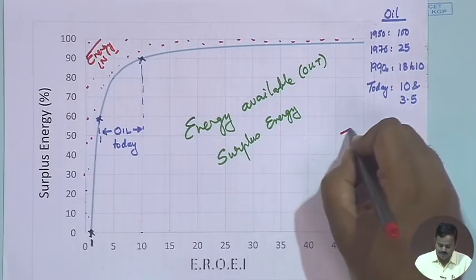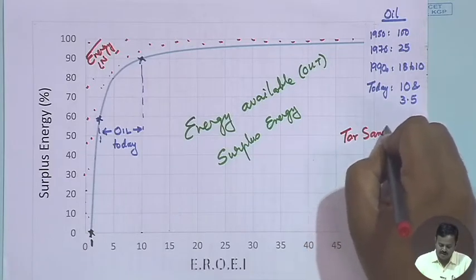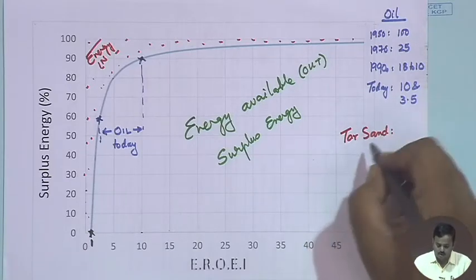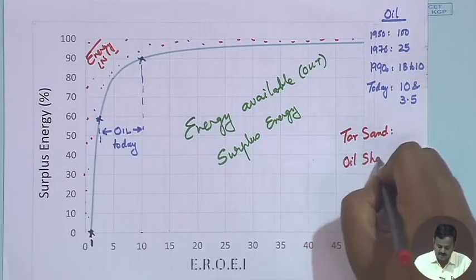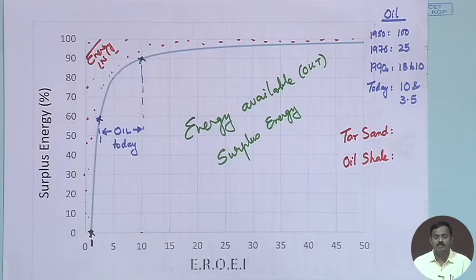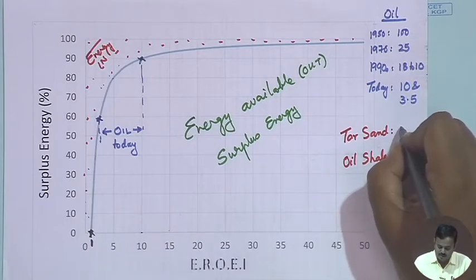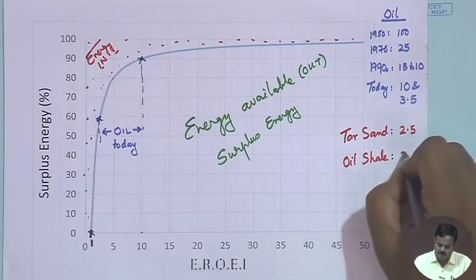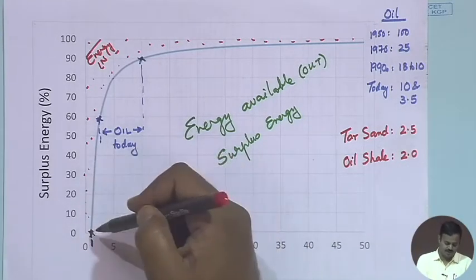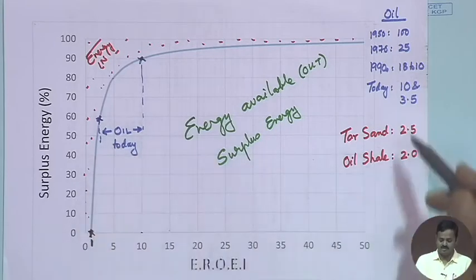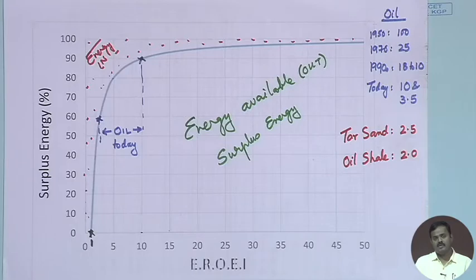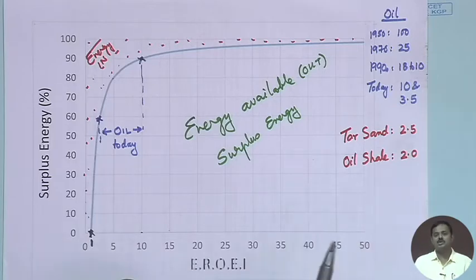If we talk about tar sand and oil shale, both have an EROEI of around 2 to 2.5 — we are right on the energy cliff for both of these. The reason is that we have to spend a lot more energy to get these sources out of the shale rocks.